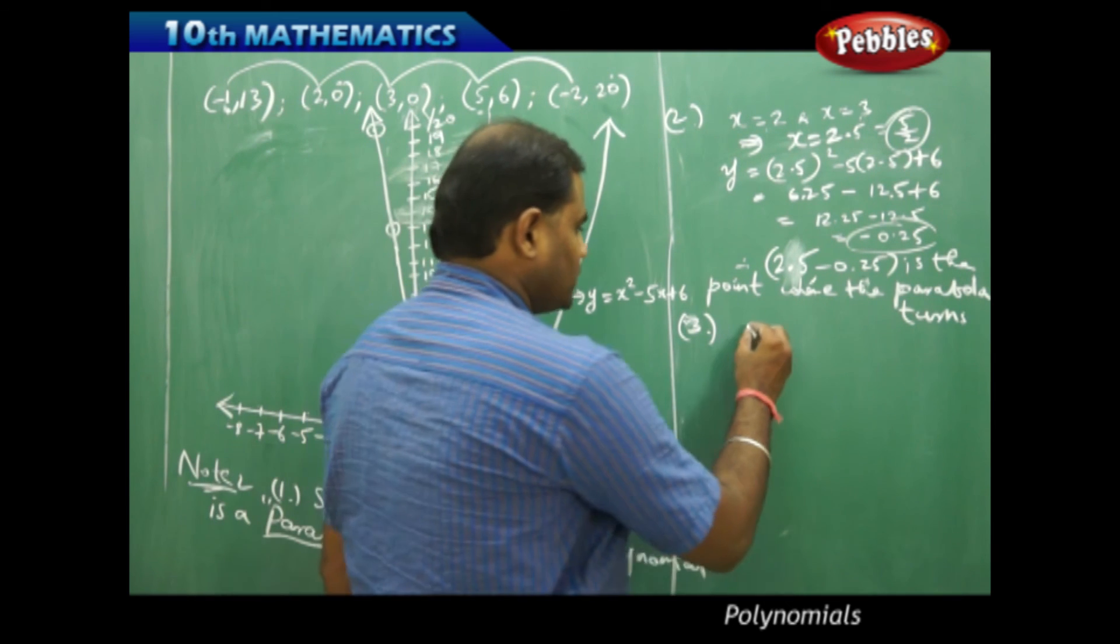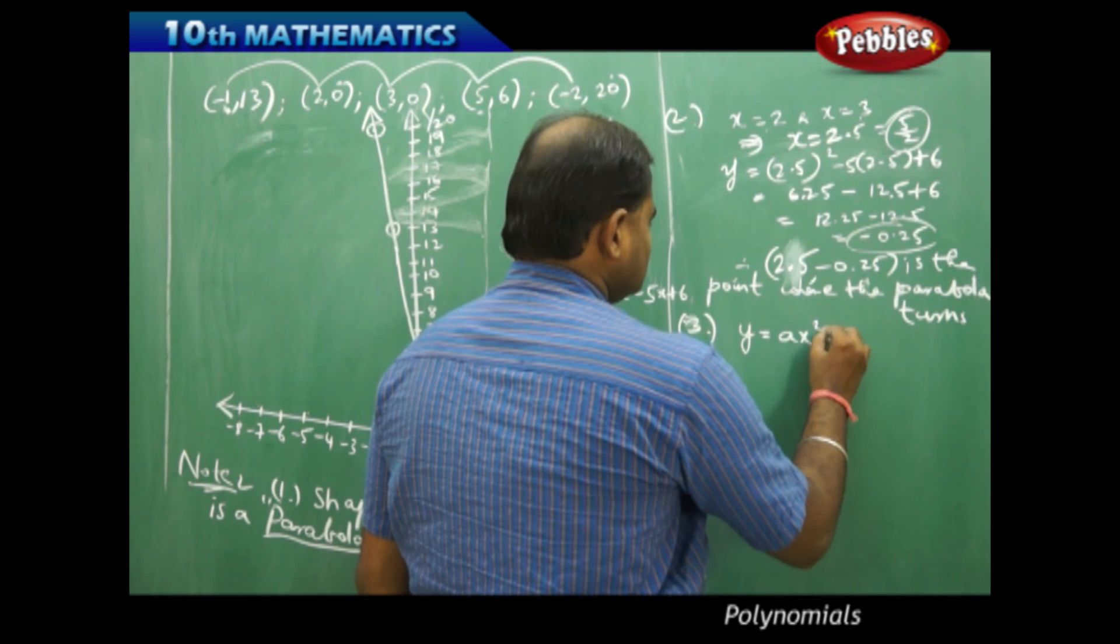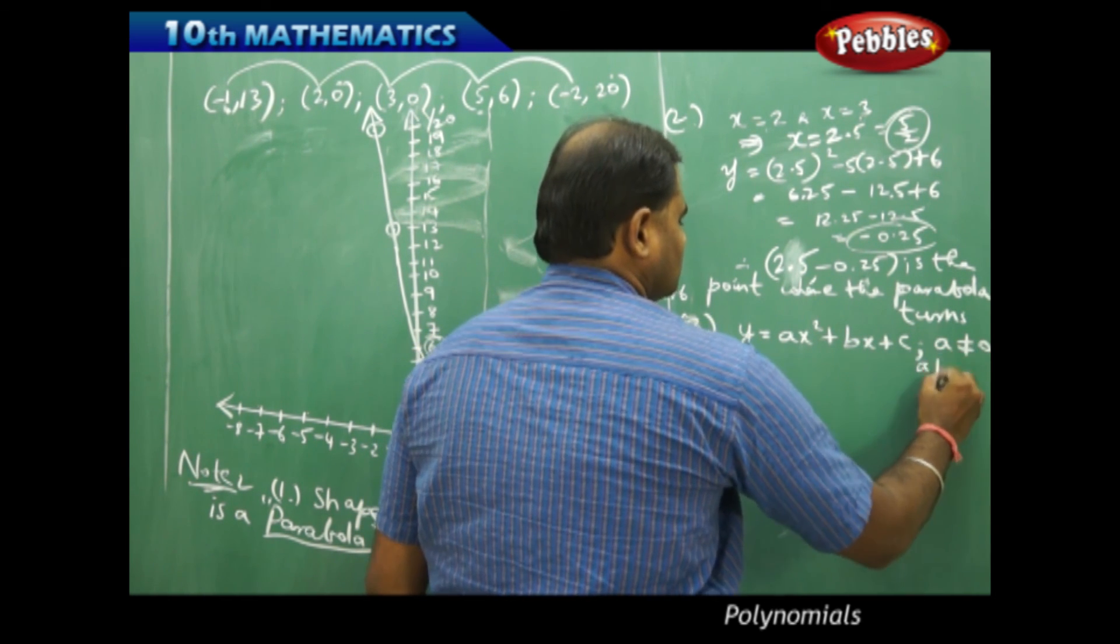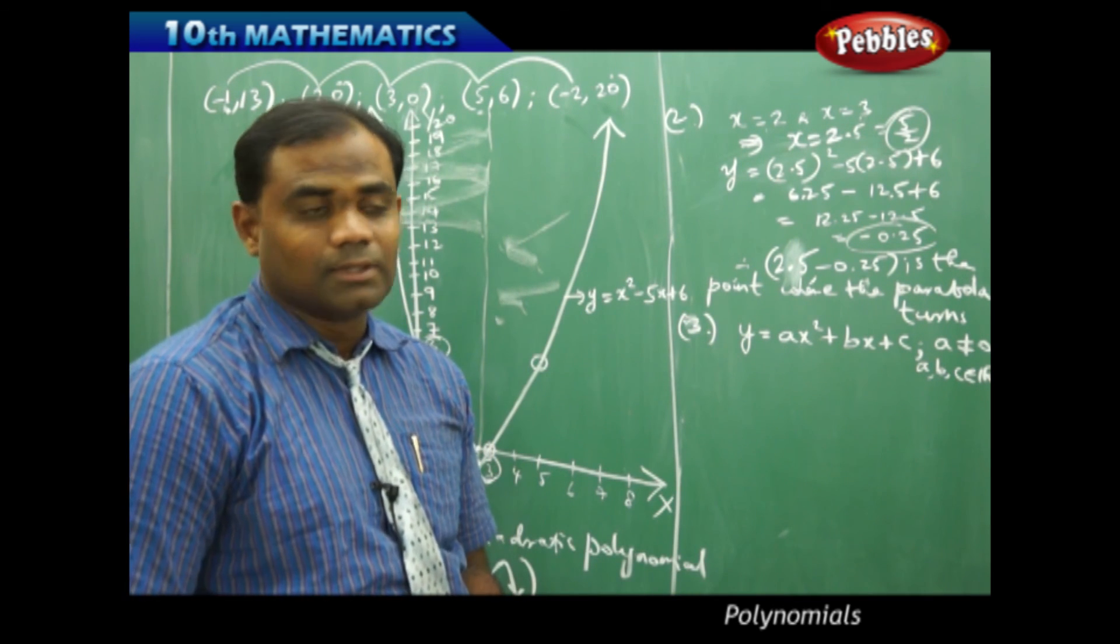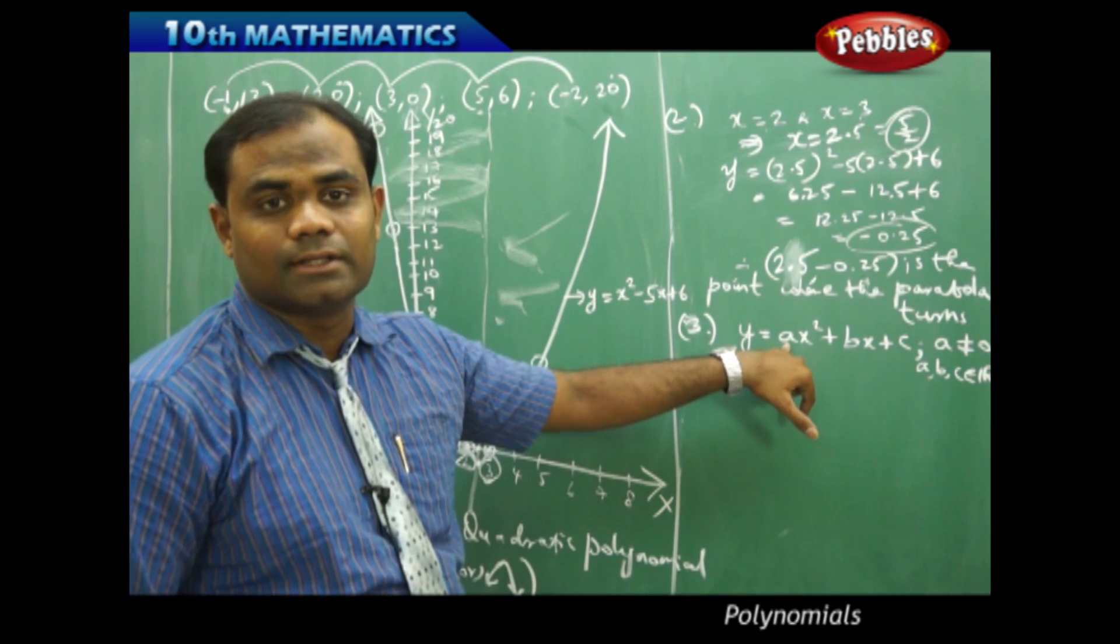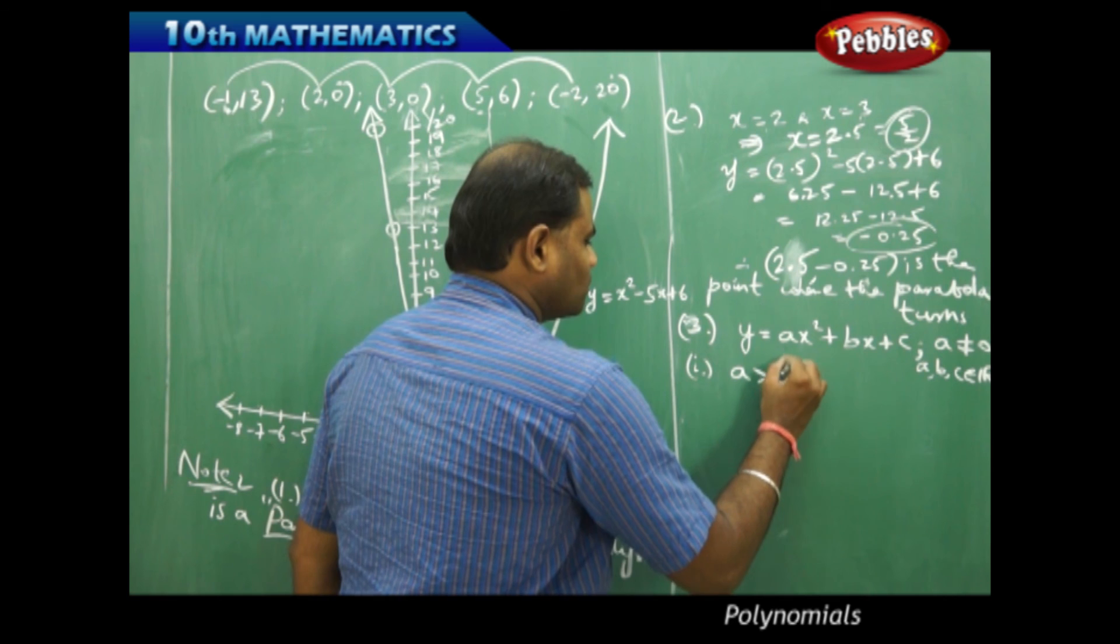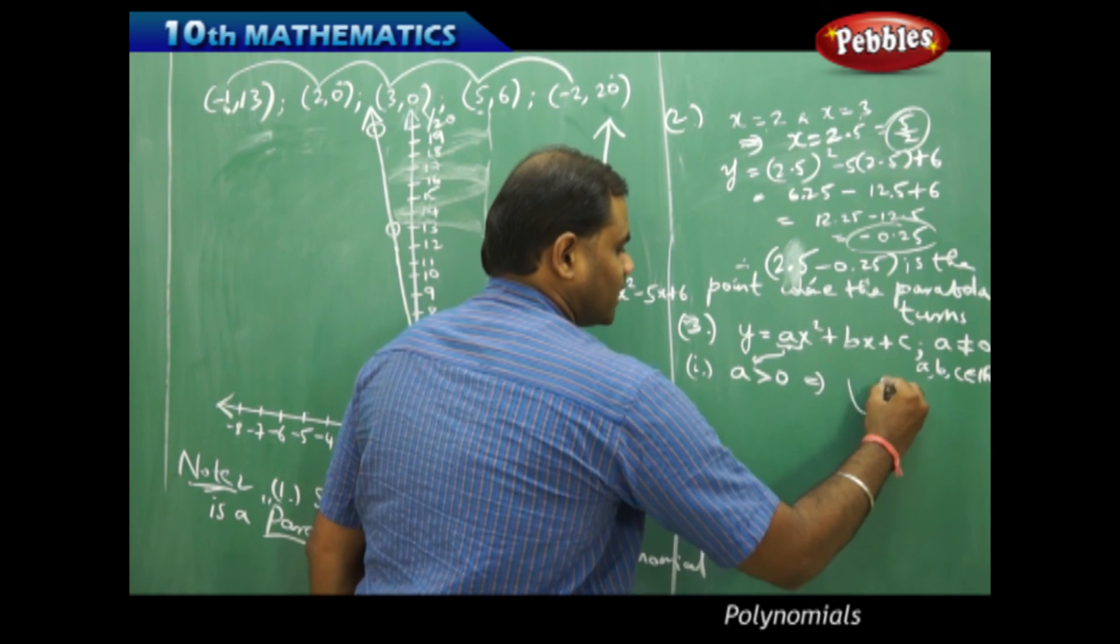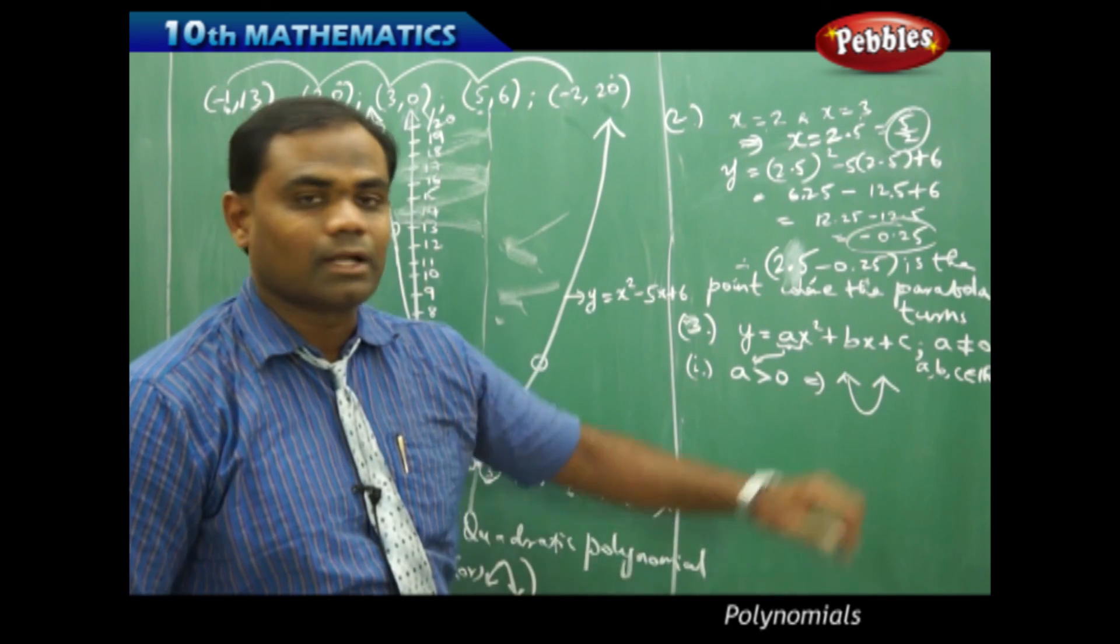So, here if I take the parabola in general form, then I say that the parabola is upwards if a is greater than 0. So, a greater than 0, this a being greater than 0 implies, I get an upward parabola. Straight away, an upward parabola.